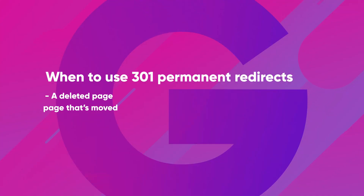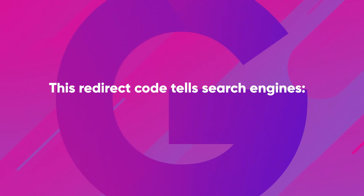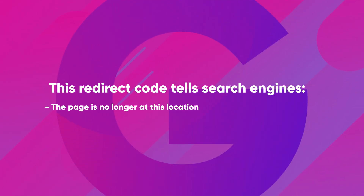301 permanent redirects. A 301 redirect is one of the most common types and should be used if you want to permanently redirect either a deleted page, a page that's moved, or a page whose permanent structure has changed. This redirect code tells search engines that the page is no longer at this location and should no longer be indexed. Because of this, make sure that you don't intend on using that URL again, as it will transfer all link value over to the new URL. If you don't put this redirect in and someone clicks a link to your old page, the user and crawl bots will be presented with a 404 error message.